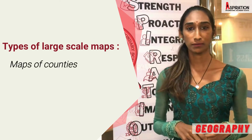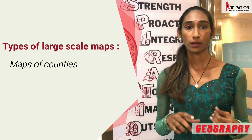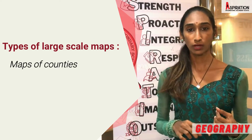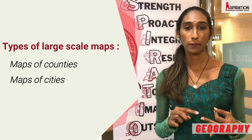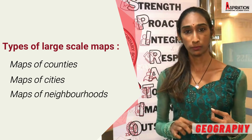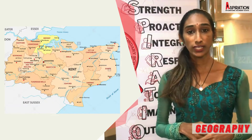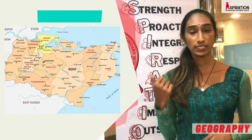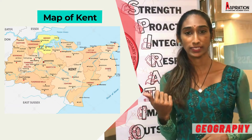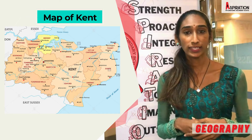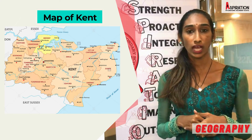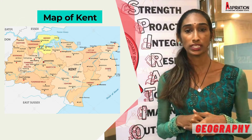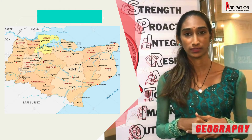Other large scale maps are maps of a county, maps of a city, maps of a neighbourhood. For instance, this is a map of Kent, and Kent is one of the counties in England. It shows towns, roads and rivers.